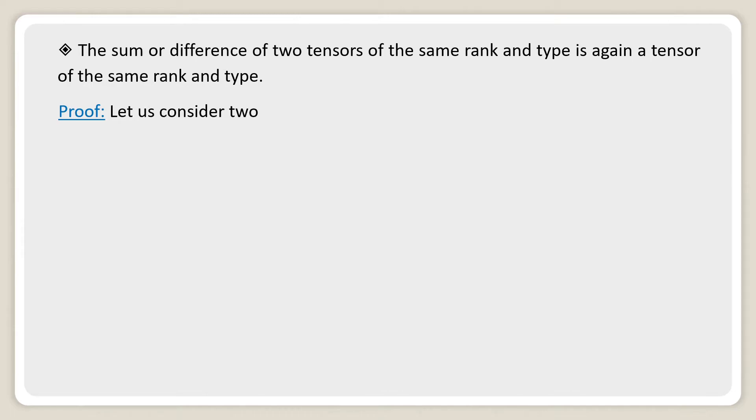Let us consider two tensors A^i_j and B^i_j of order 2 each of mixed characteristics. Let A^i_j plus B^i_j equal C^i_j. Say this equation is number 1. To prove that C^i_j is also a tensor.